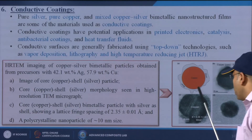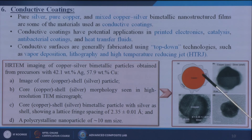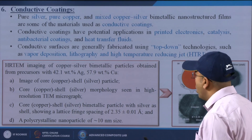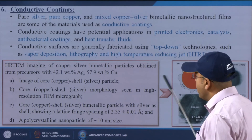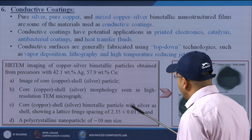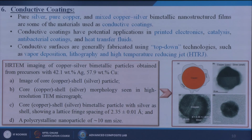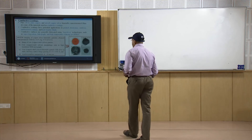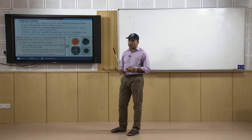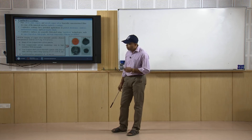Here is an example where copper is the core material and silver is the shell coating. This is a high-resolution transmission electron microscopy (HRTEM) figure showing copper-silver bimetallic particles obtained from precursors with 42.1% silver and 57.98% copper. Image A is a schematic illustration of a core-copper shell-silver particle. B shows the core copper and shell in a highly-resolved TEM micrograph. C shows the copper bimetallic particle with silver as shell, displaying a lattice fringe spacing of 2.35 ± 0.01 Å. D shows a polycrystalline nanoparticle of 10 nm size, proving that silver has a good affinity and coating thickness on copper particles.